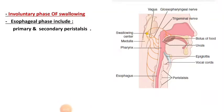This is the involuntary phase of swallowing. The involuntary stage of swallowing includes the pharyngeal and esophageal stages. We discussed the pharyngeal stage of swallowing in the last lecture. In this lecture, we will discuss the esophageal stage of swallowing.